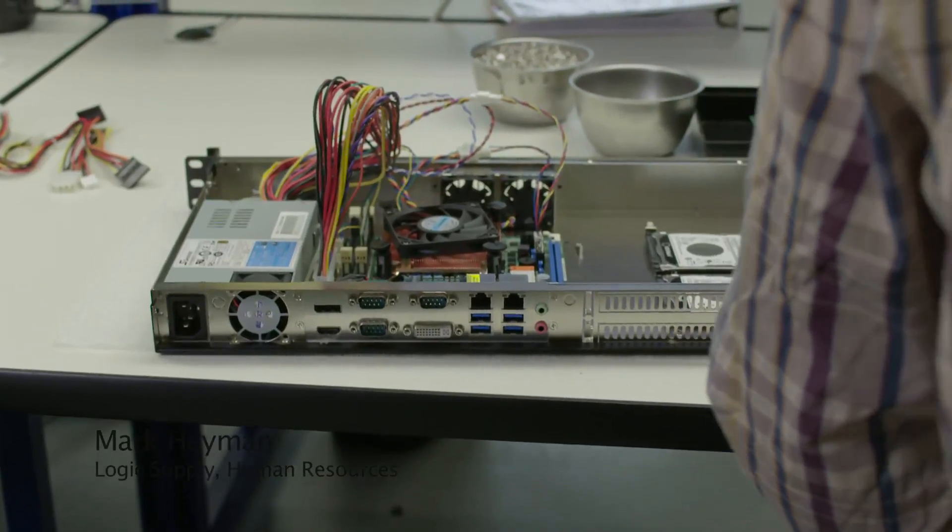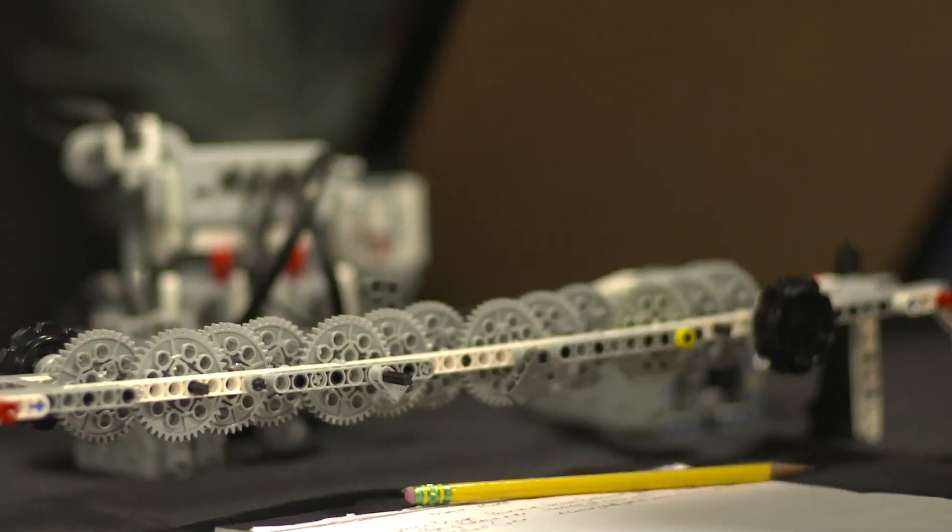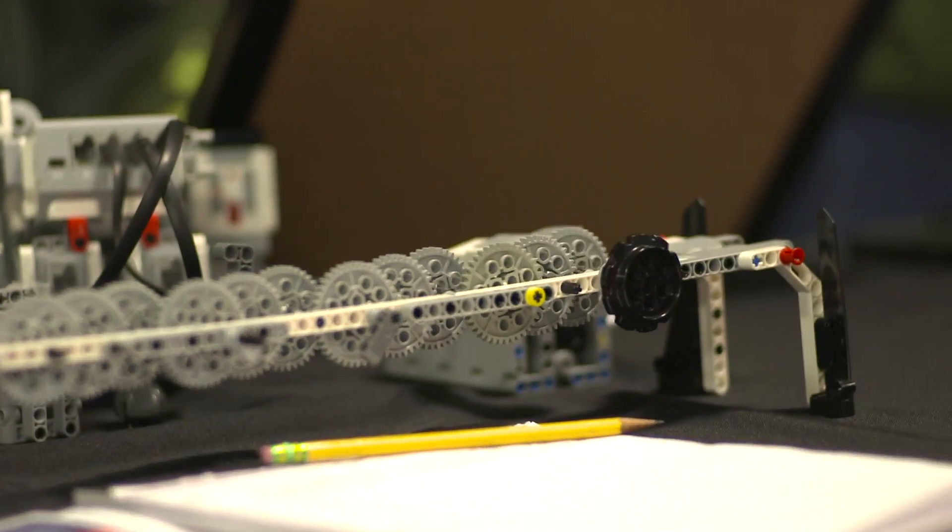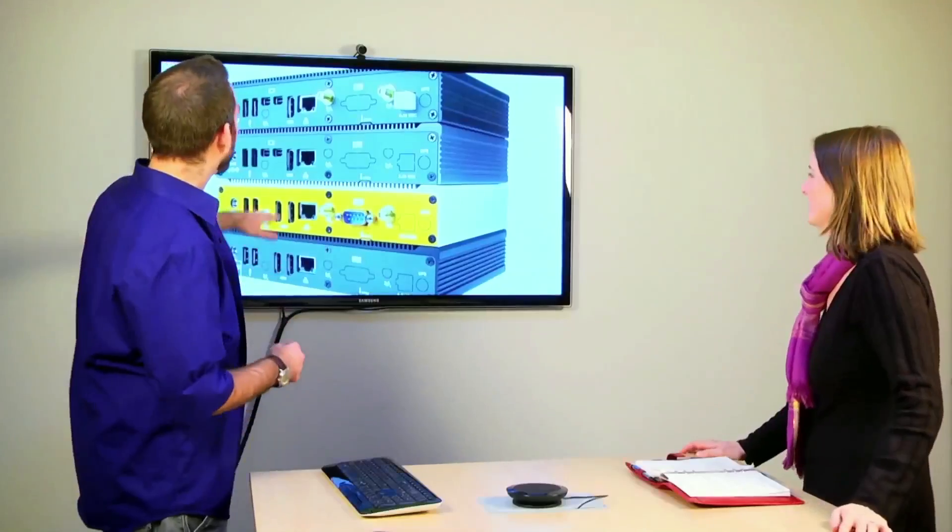What kind of people gravitate towards working at Logic Supply? What we look for, we refer to it as tinkerer's DNA. So we look for the makers, the doers, whether that's in a field like engineering where folks are hands-on, or in some of the other non-techie, maybe HR type roles, we're still looking for folks that have a passion for whatever they're doing. That's awesome.